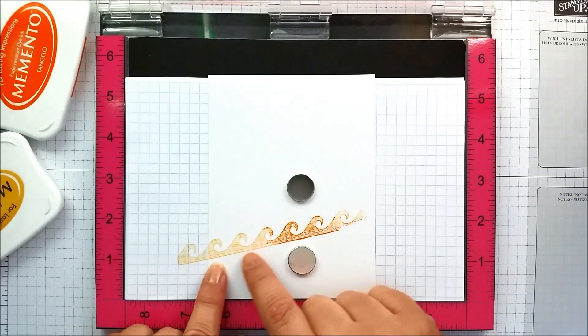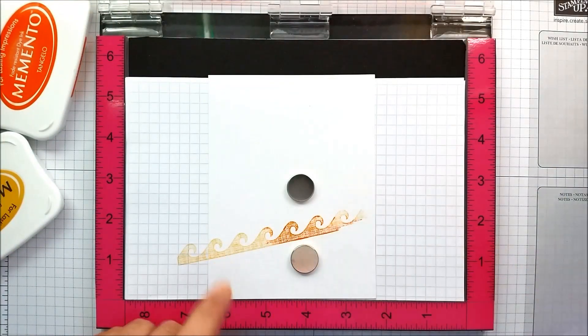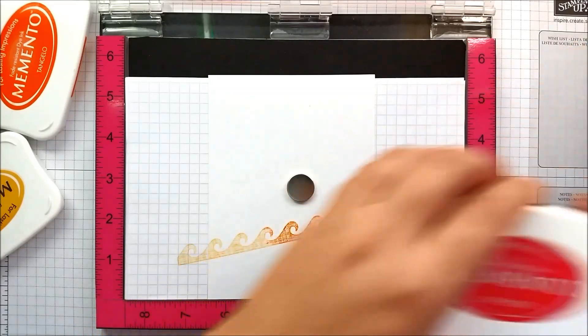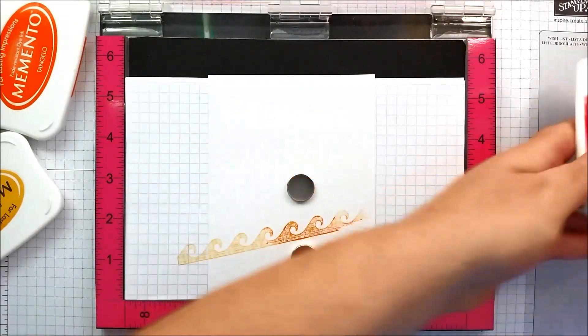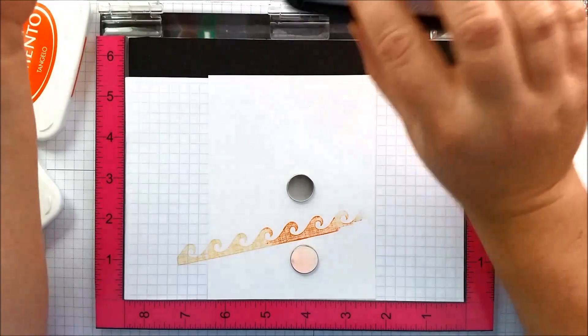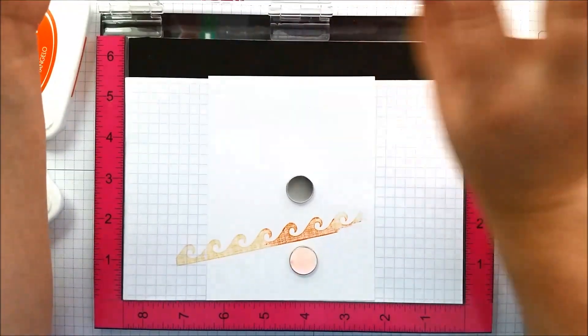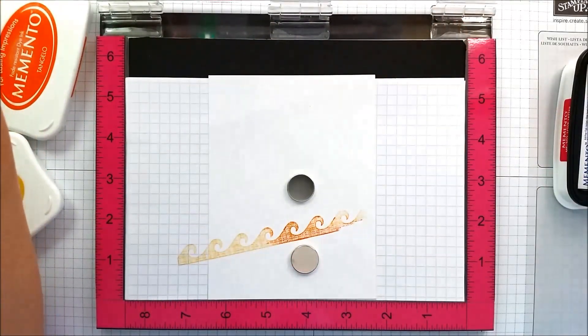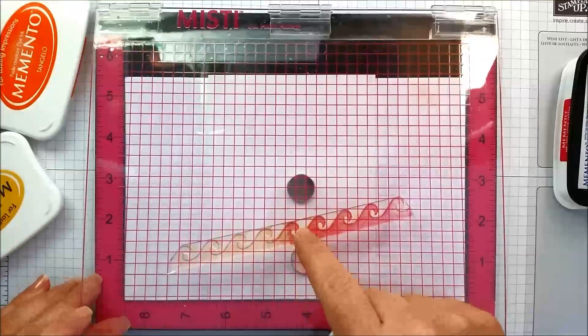So now we've gone from yellow to orange and let's put some red in the bottom. I'm going to use Love Letter. Once again I'm taking my ink pad up to that wave. See my red comes down here.